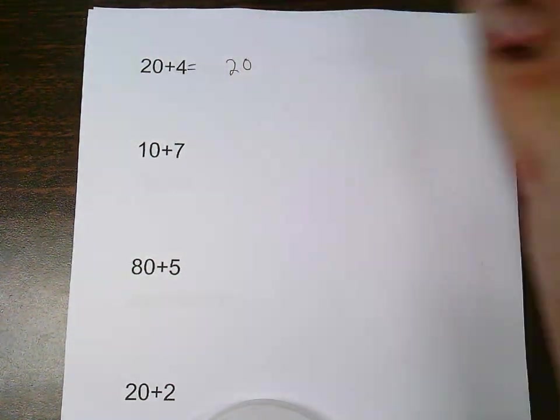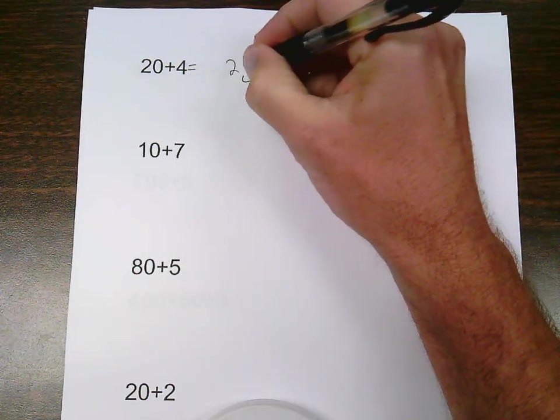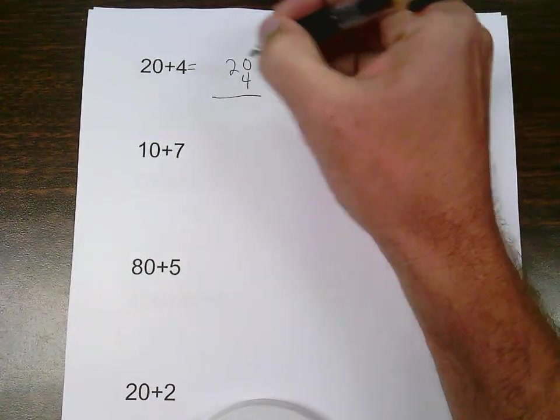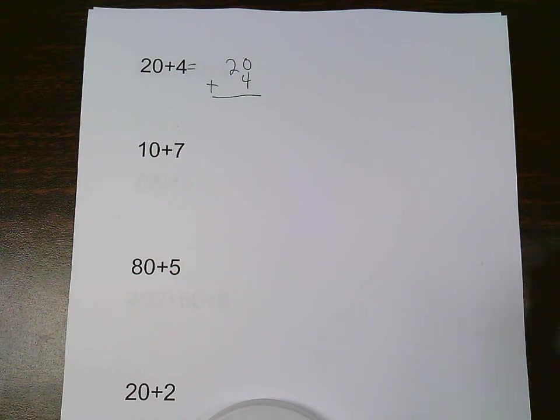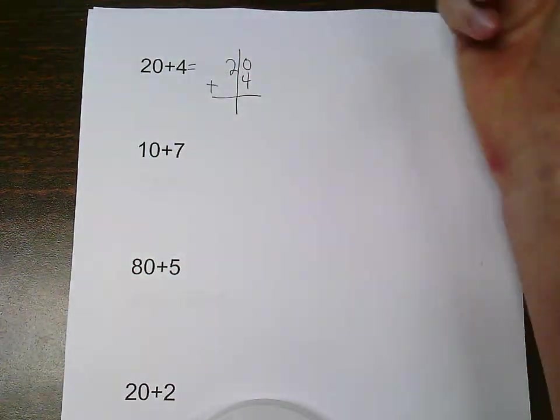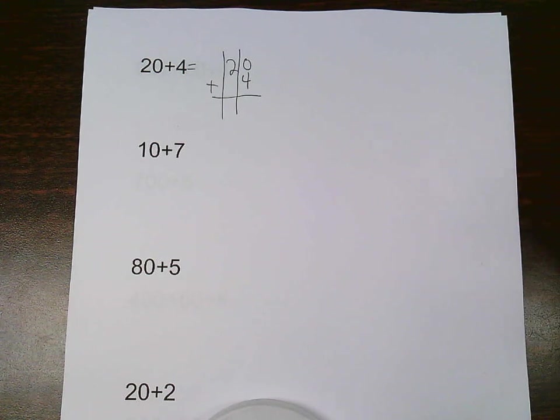So I put my largest number up top, and I put my next largest number down underneath. The most important part of this is that I line them up by place value. My ones need to be lined up with my ones, my tens need to be lined up with my tens.